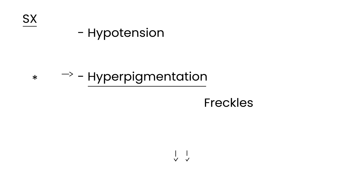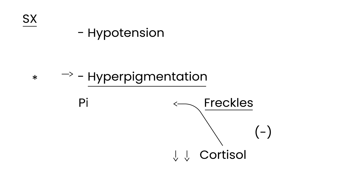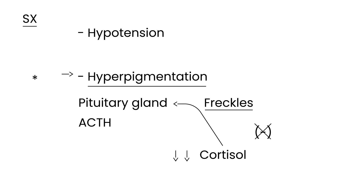In Addison's disease, you have very low levels of cortisol because the adrenal gland is deficient. Normally the adrenal gland has a negative feedback to the pituitary gland. When you have normal cortisol levels, that negative feedback tells the pituitary we don't need any more cortisol. In Addison's disease, cortisol is very low, so this negative feedback doesn't work. As a result, the pituitary keeps making ACTH in high quantities.